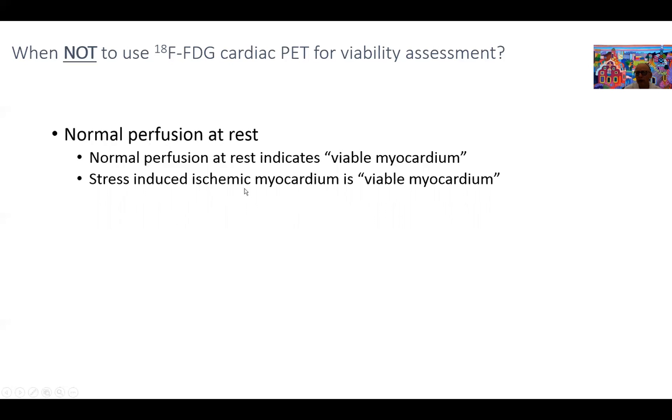Other instances where you should not use FDG for assessment of viability: if you have normal perfusion at rest, if all the segments are perfused at rest, that's by definition viable myocardium. Also, if you have ischemia, a segment that's proven to be ischemic, that's by definition viable and should not be assessed with FDG unless you're looking for ischemic memory, which theoretically is academically important but probably from a practical standpoint is not.